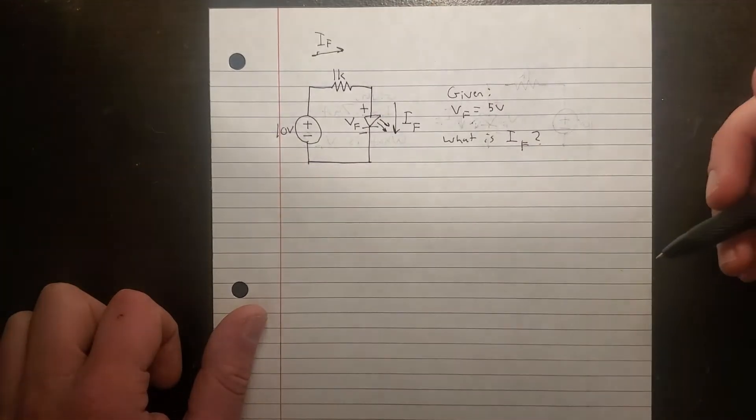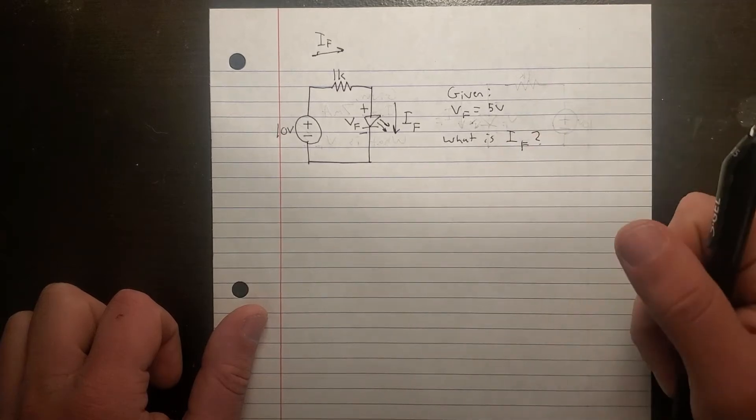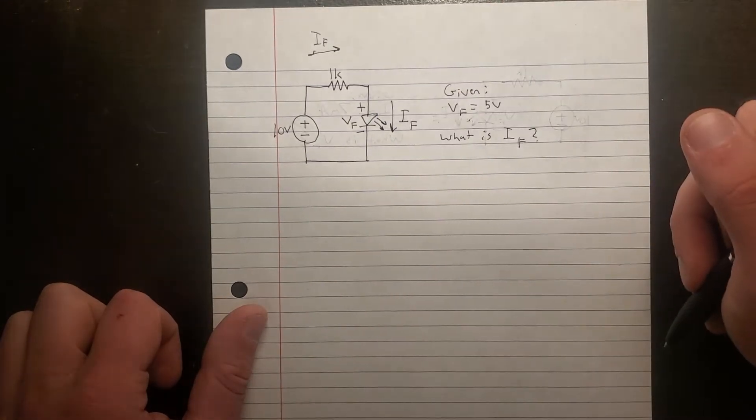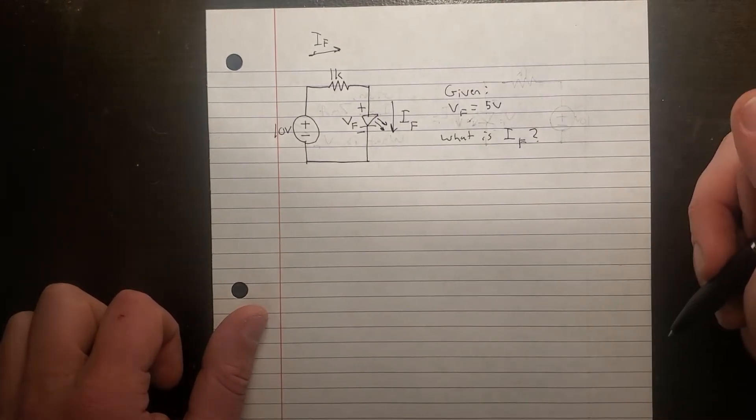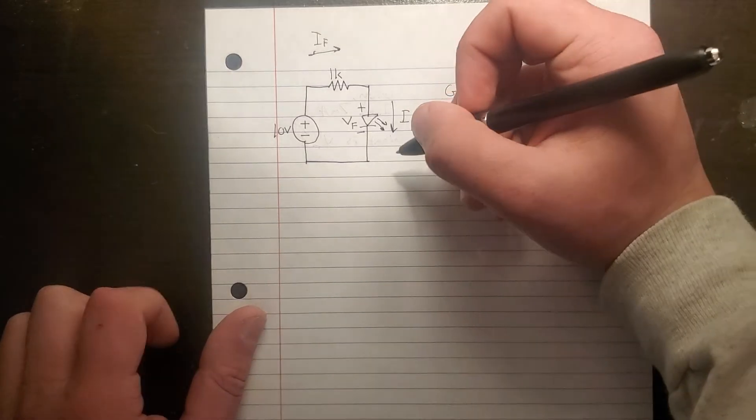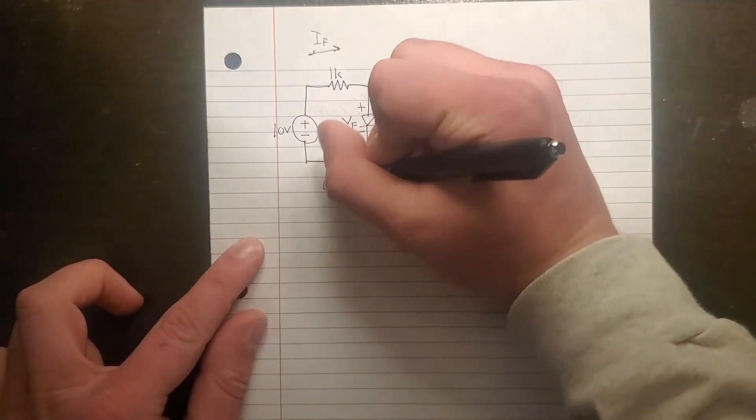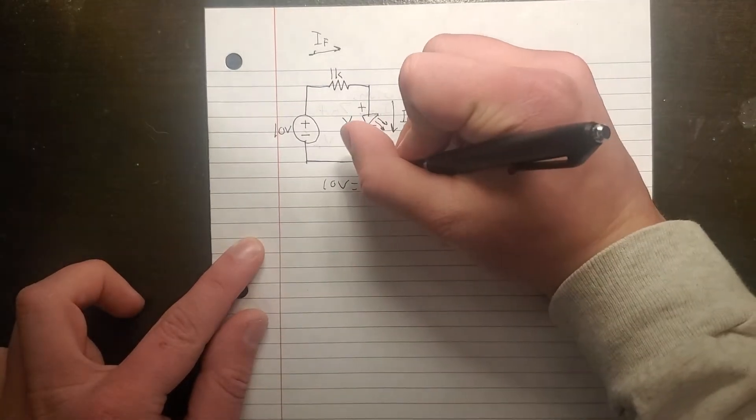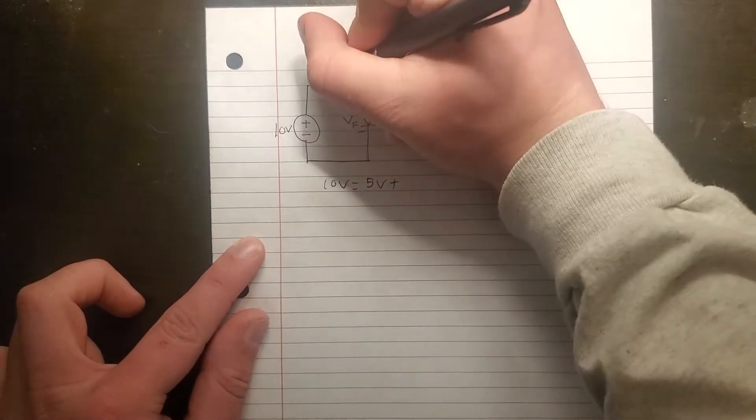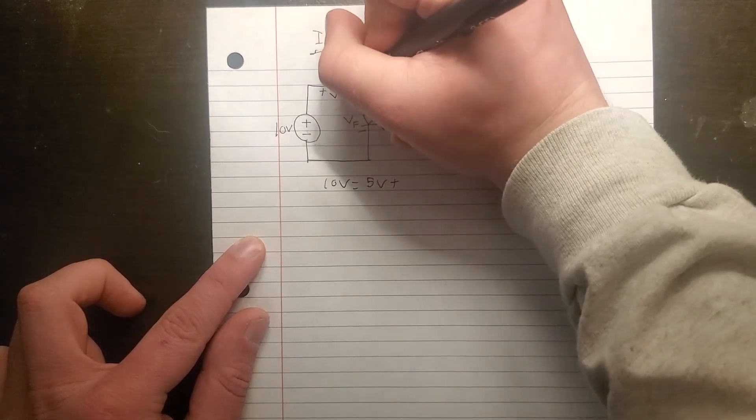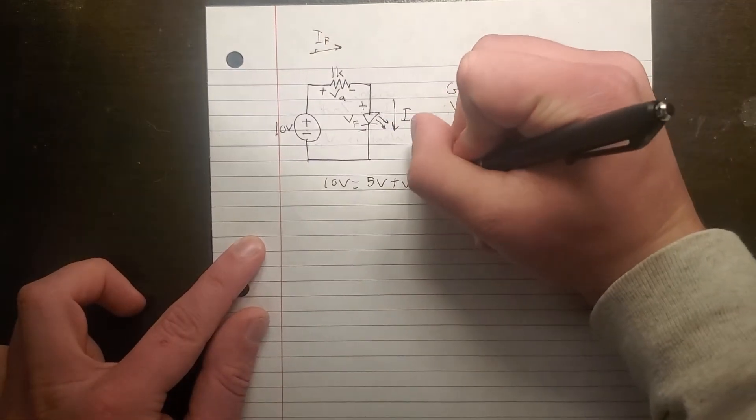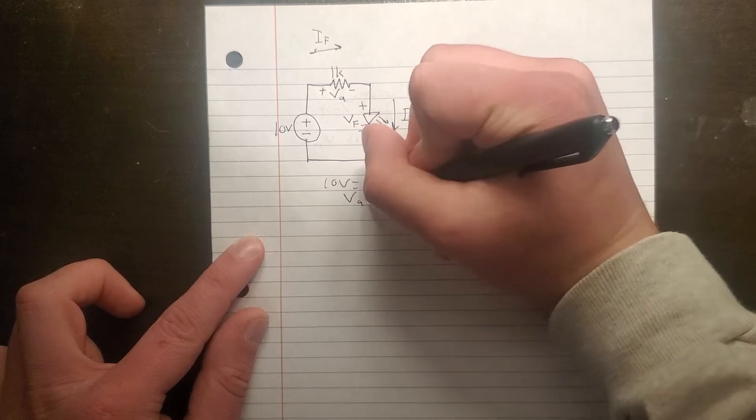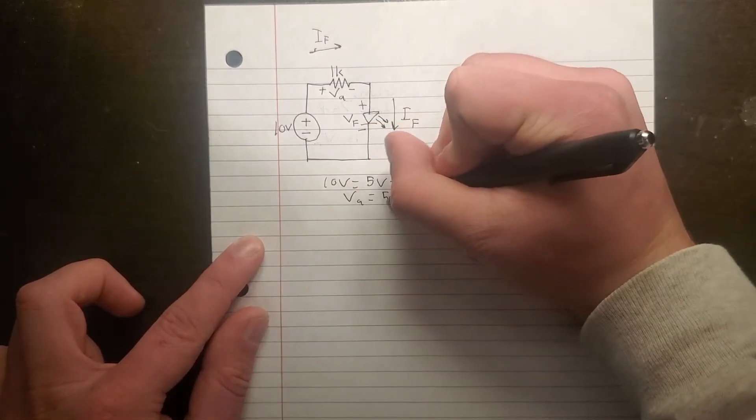So in this case, we already know we have 5V from this LED per our forward voltage. So 10V is equal to 5V plus, let's label this VA. Okay, well, we can see here pretty quickly that that's just going to be 5V.